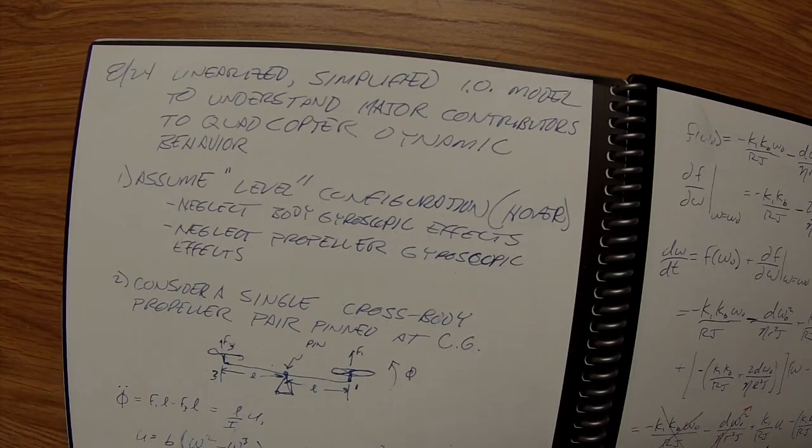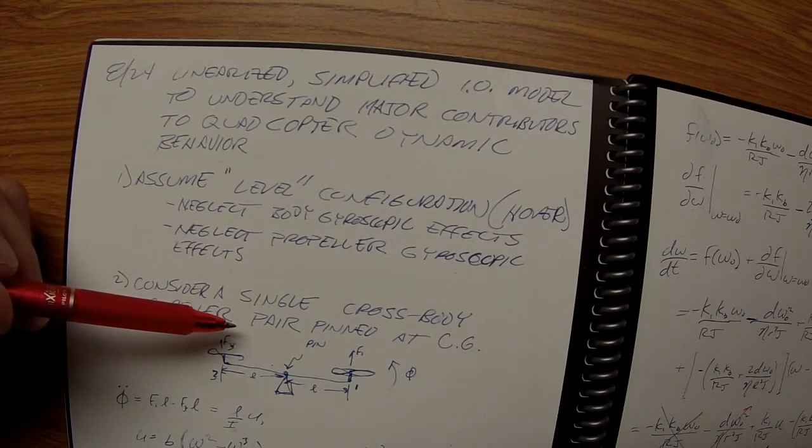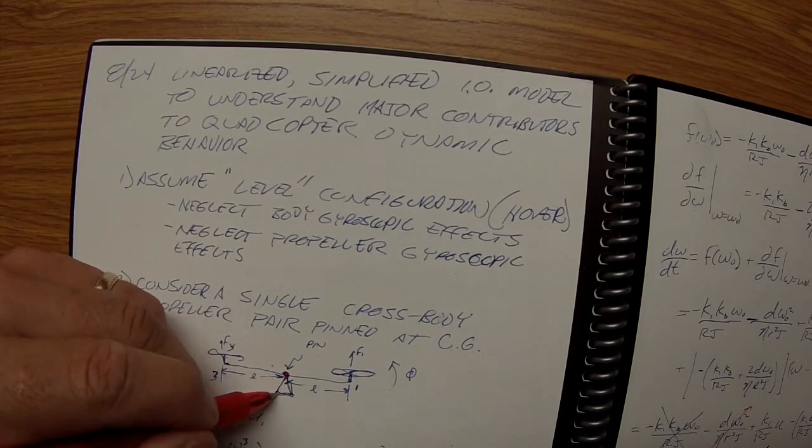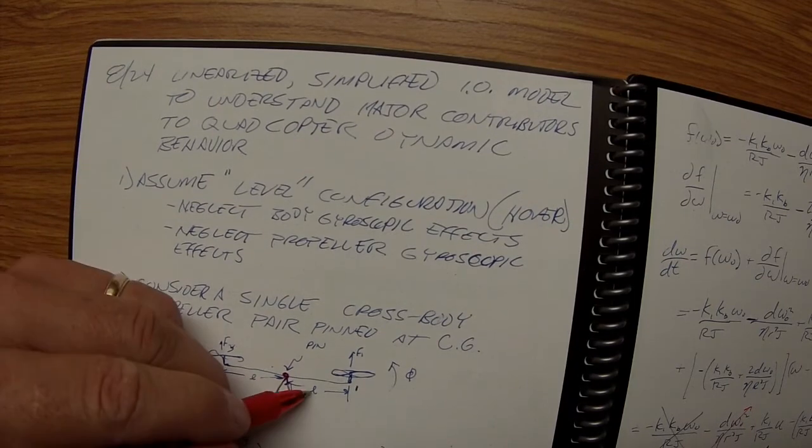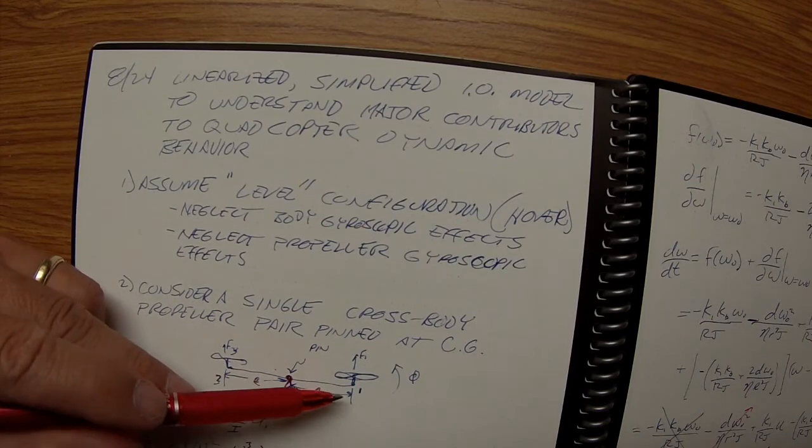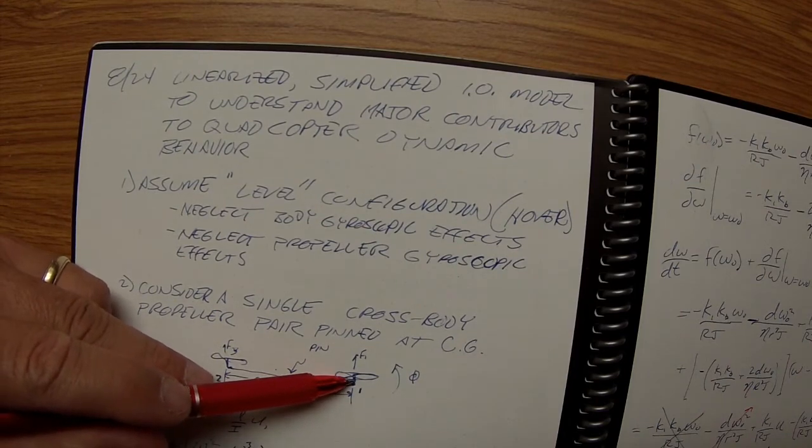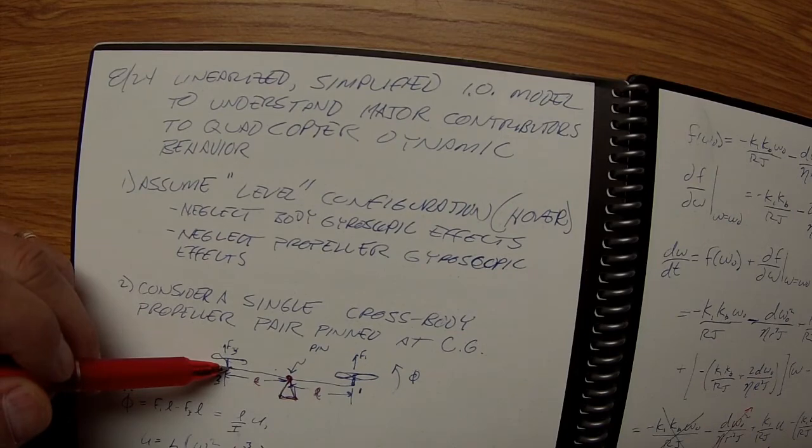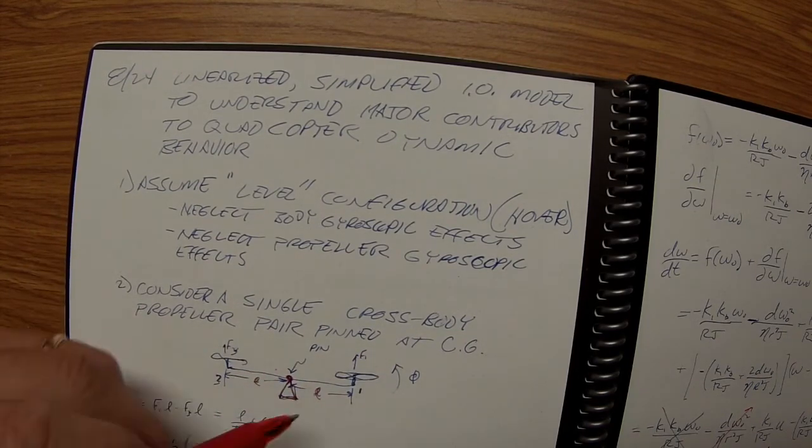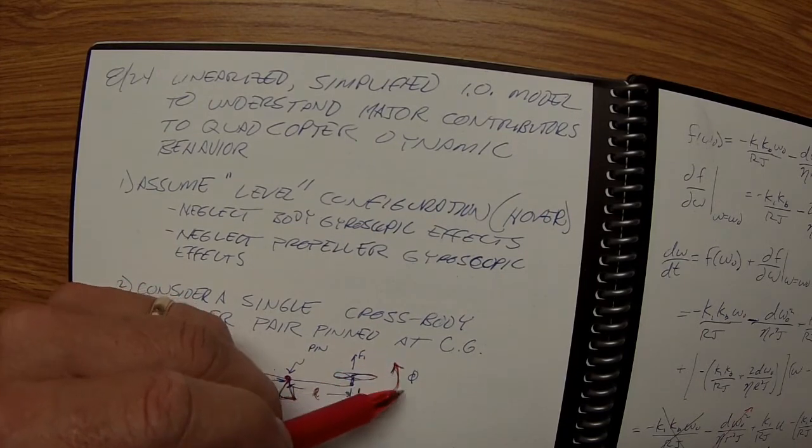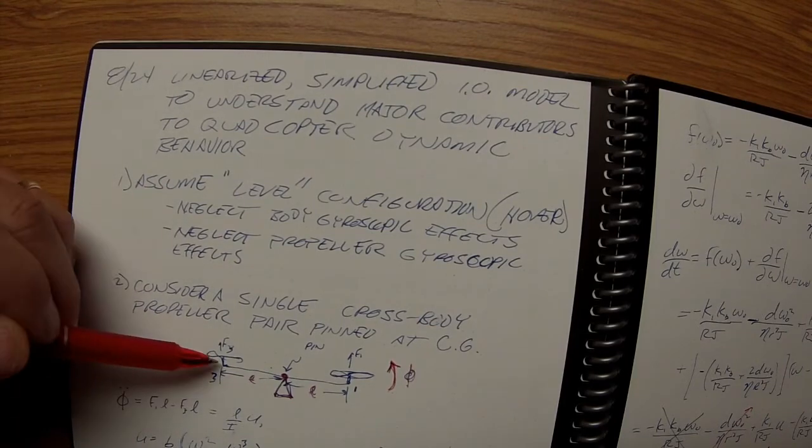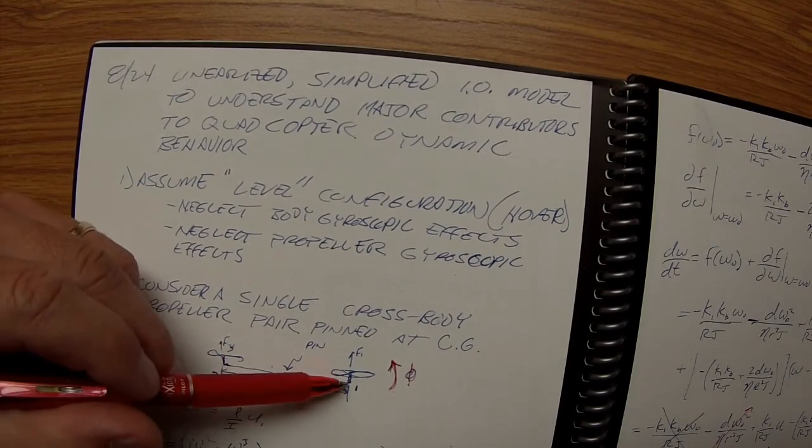We're neglecting the body gyroscopic effects and the propeller gyroscopic effects. What I drew here, somewhat sloppily, is just a single cross body propeller pair pinned at the center of mass with the arm length of L. It's sort of like a teeter-totter with one propeller motor combination on one side and one on the other.